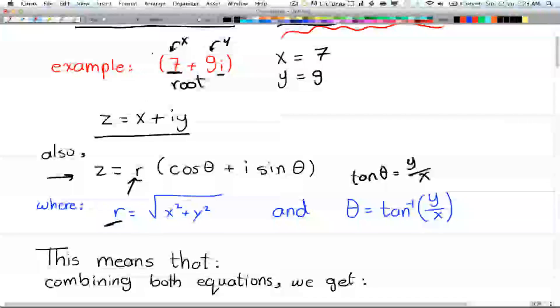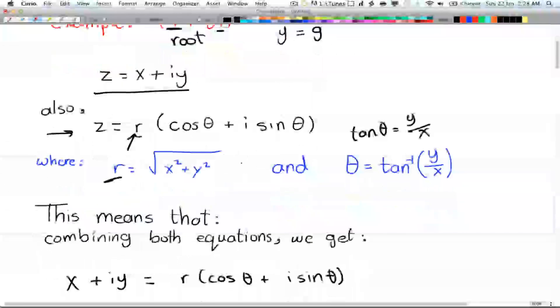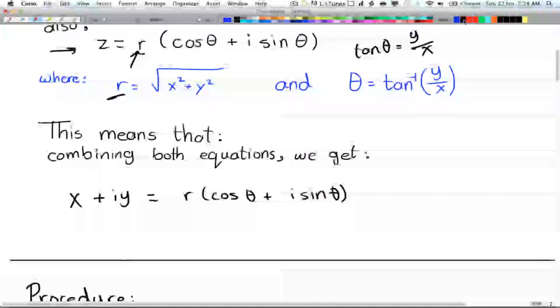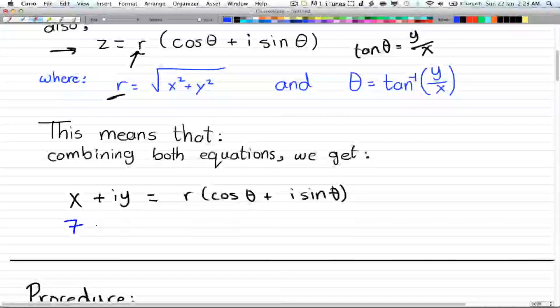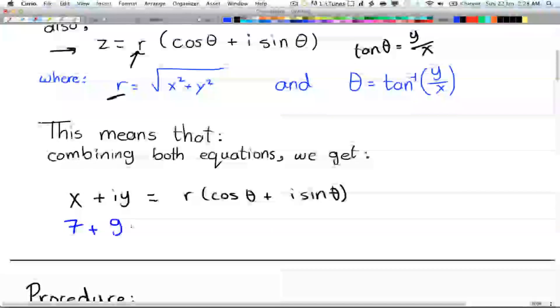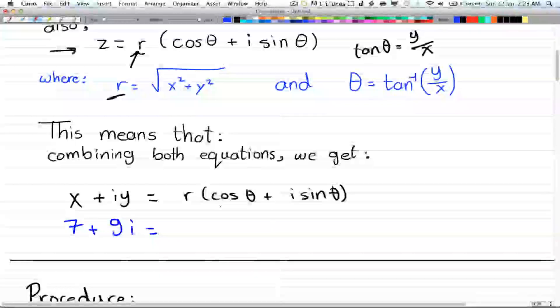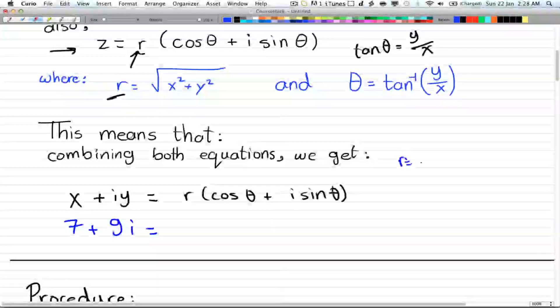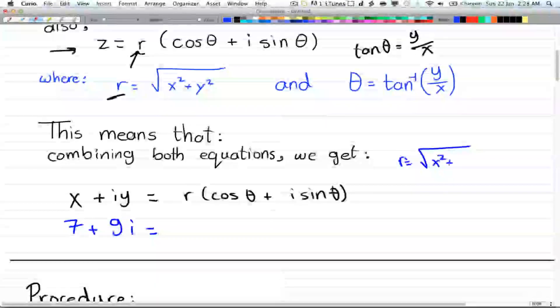Well, if you have this example here, 7 + 9i, you can rewrite that. First of all, you're going to have to find r, which is the square root of x squared plus y squared.